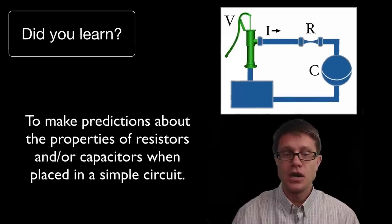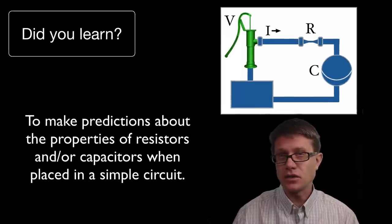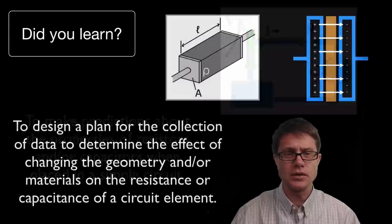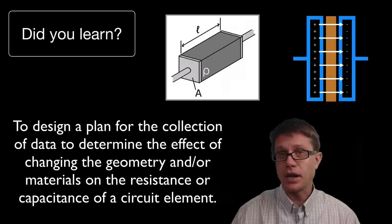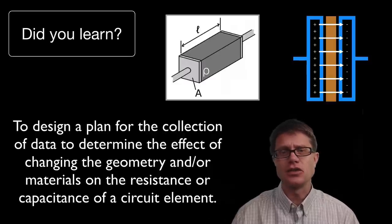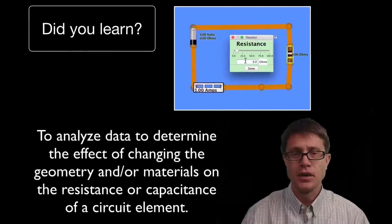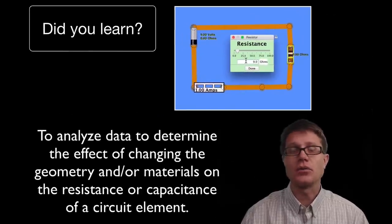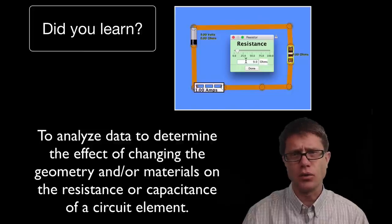Did you learn to make predictions about how resistors and capacitors work in a circuit? Remember: resistors resist flow, capacitors store energy. Could you design a capacitor and a resistor that works best, considering the material and the geometry? Could you analyze how changing the resistor or capacitor could change the voltage and current inside a circuit? I hope so, and I hope that was helpful.